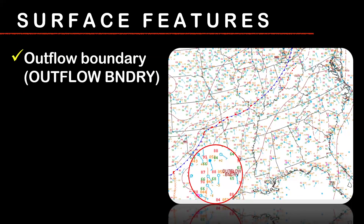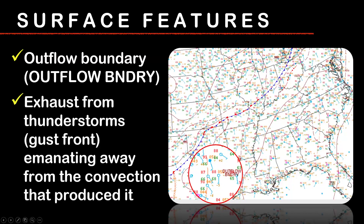You may also see something labeled outflow boundary. It looks a lot like a trough, but you'll see the label 'outflow boundary' right next to it. Essentially, an outflow boundary is the exhaust from thunderstorms. If you had a large area of thunderstorms develop, the outflow from that will emanate away from the convection that produced it, and forecasters can track where that boundary is located. In some cases, an outflow boundary can act as a mini cold front — a gust front of sorts — and can produce upward motion and contribute to development of other convection. These outflow boundaries can persist into the next day and be the focal point of the next day's round of convection.